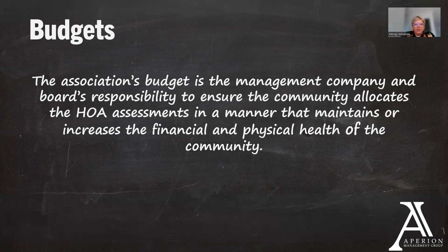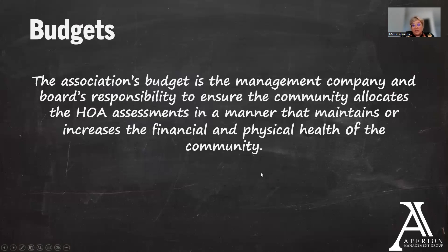Typically you're going to see two different budgets: an operating budget and a reserve budget. The purpose of the operating budget is to cover the usual monthly expenses that HOAs incur. This includes items like insurance premiums, routine maintenance, management fees, and dues. Your operating budget should be managed from a checking account, making it easy to make deposits and withdrawals on a regular basis, as this is typically what you use to pay your vendors.